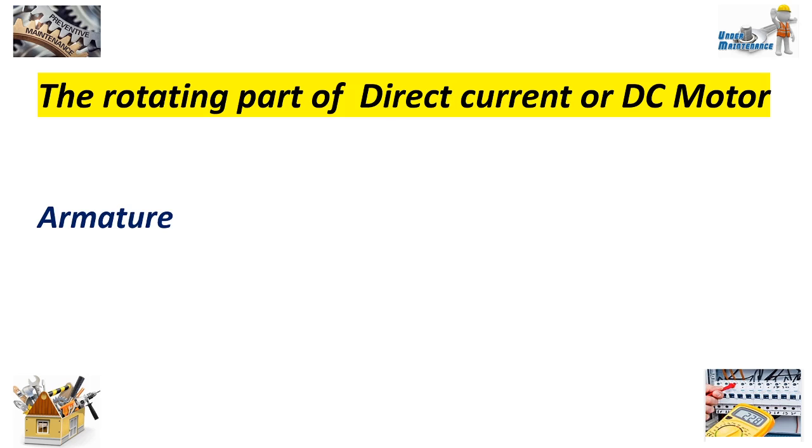The rotating part of the direct current or DC motor. Answer: Armature.